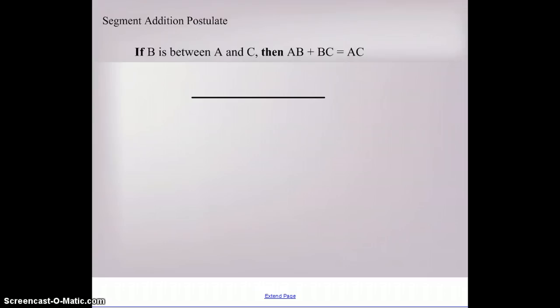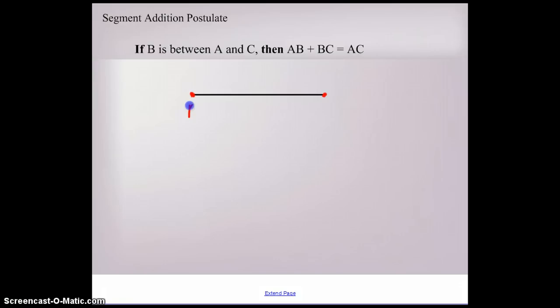The segment addition postulate is telling us if B is between points A and C, then AB plus BC equals AC. We have A and C as our endpoints, and B is just somewhere in between. Notice we're not saying that it's in the middle, just somewhere. You could put it to the left, to the right, just avoid the middle for any confusion. So the length of AB plus the length of BC is equal to the length of AC. Very straightforward, very simple. This is known as the segment addition postulate, which you will start seeing me abbreviate as SAP.